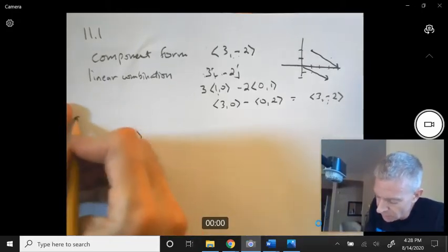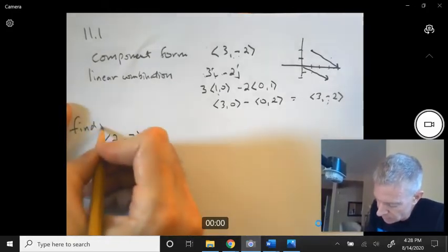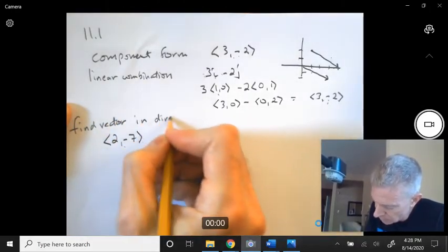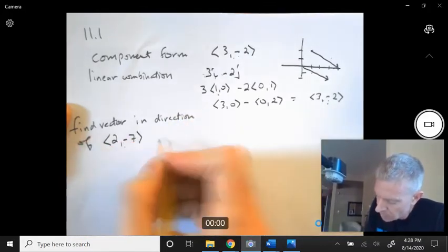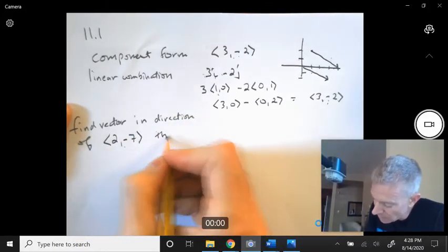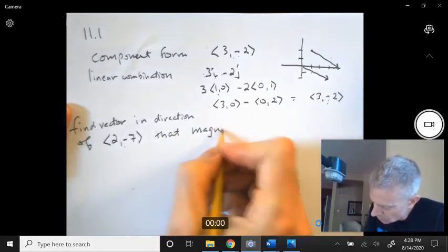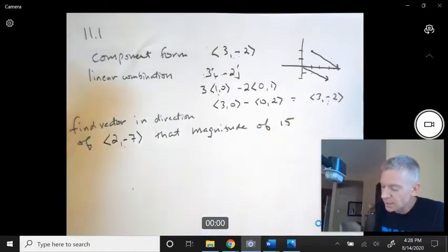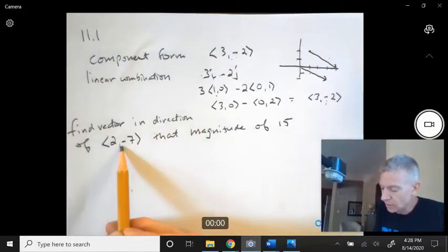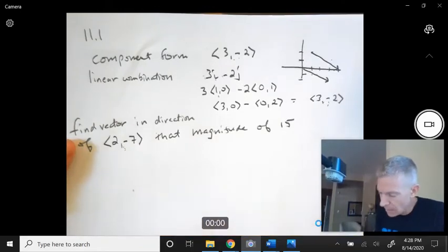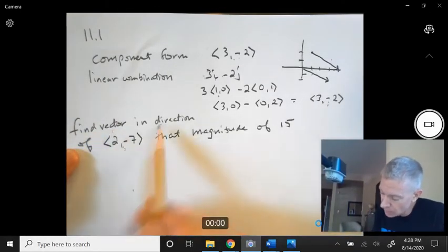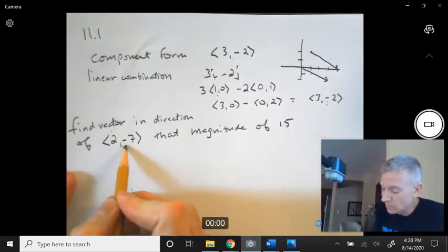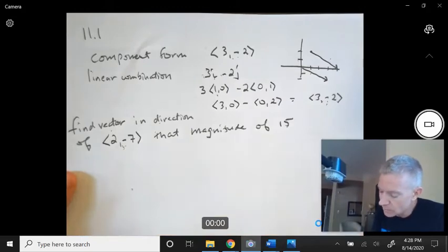Remember, a vector has magnitude and direction. A scalar simply has magnitude. If we want to find another vector in this direction with a magnitude of this, first thing we do is turn this into a unit vector. Let's strip out whatever length this is. Let's find the magnitude.